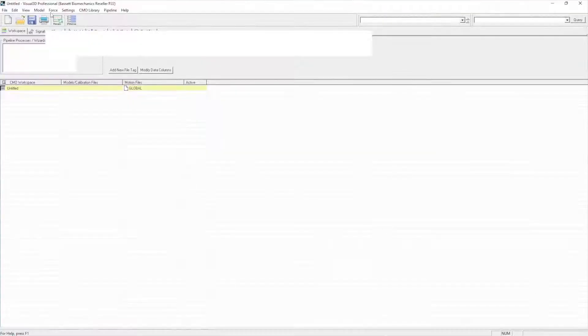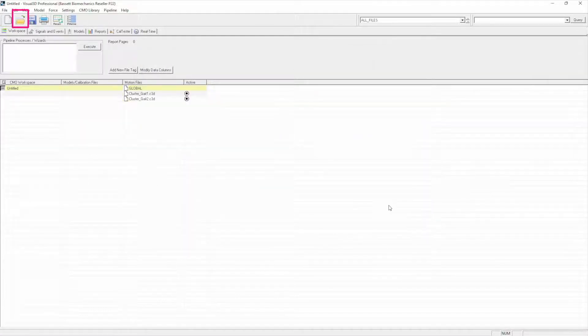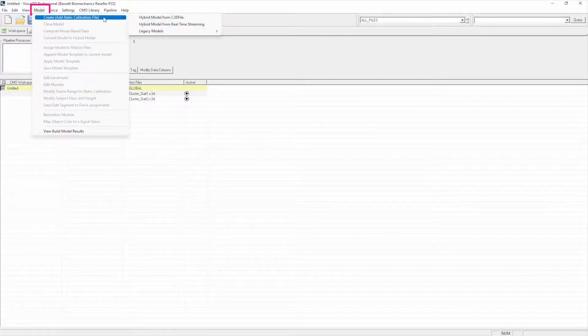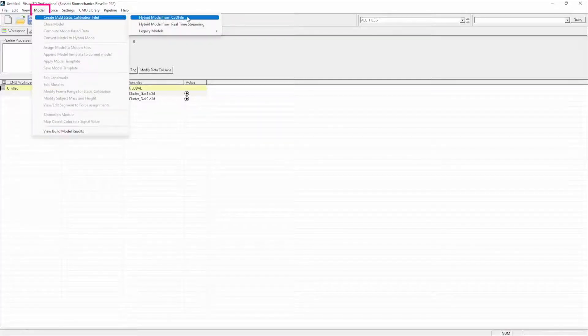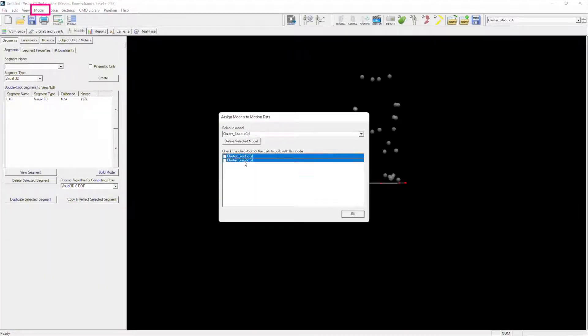In Visual 3D, if we just go up here to Open and pick our cluster gate 1 and cluster gate 2 files and click Open exactly as we did previously, you see they load in here. Now, if we come up here to Model, Create, Add Static Calibration File, Hybrid Model from C3D file, you can see we can open that static calibration file just as we did in the previous unit.